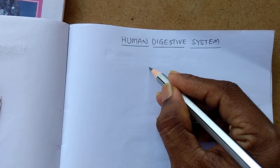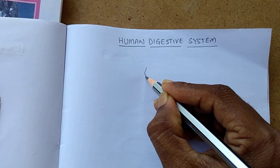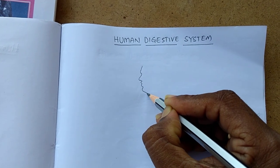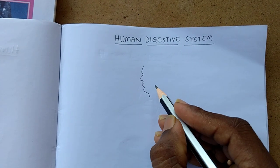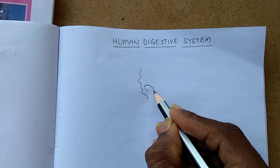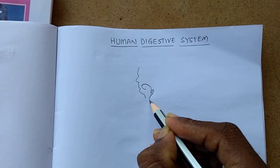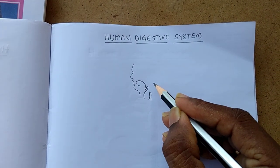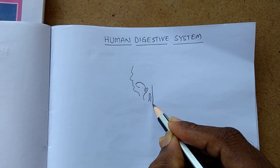...we have to draw the face of a man like this, and from there the epiglottis, and here is the esophagus.